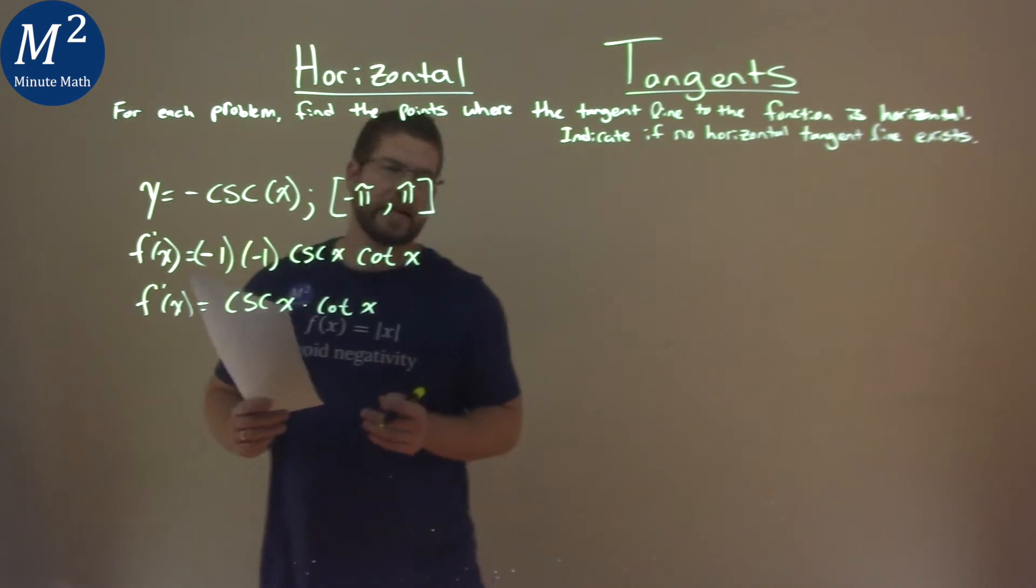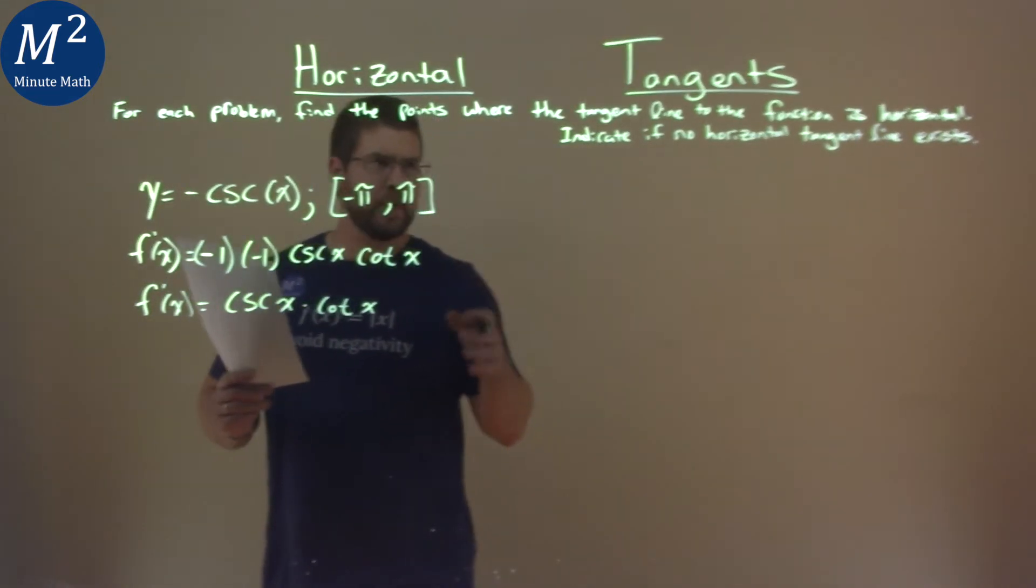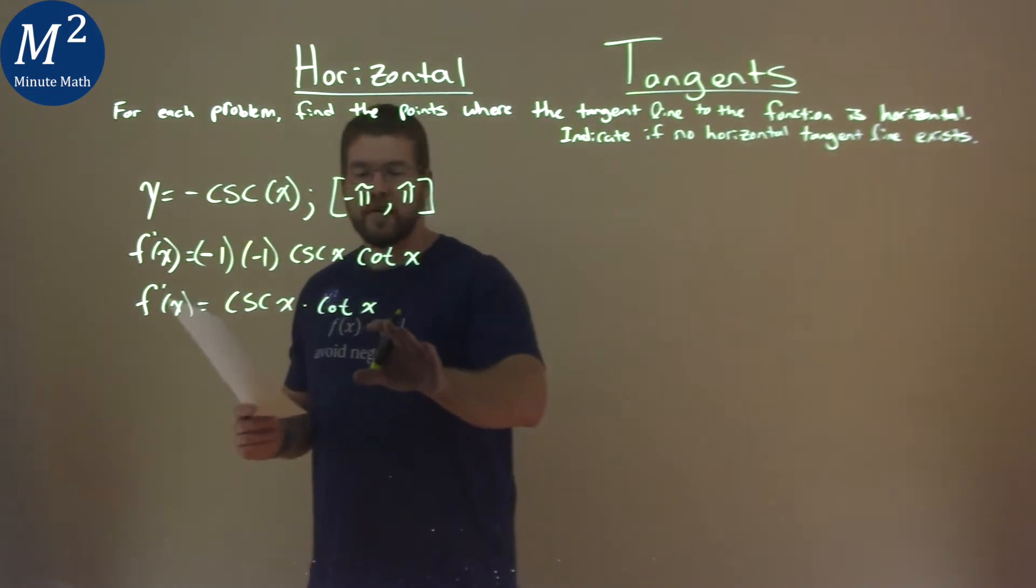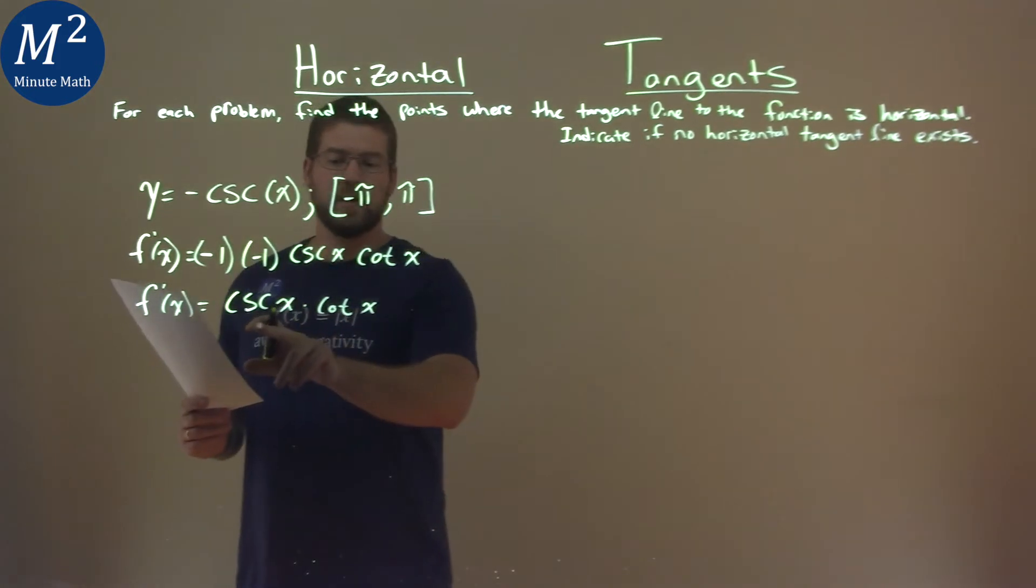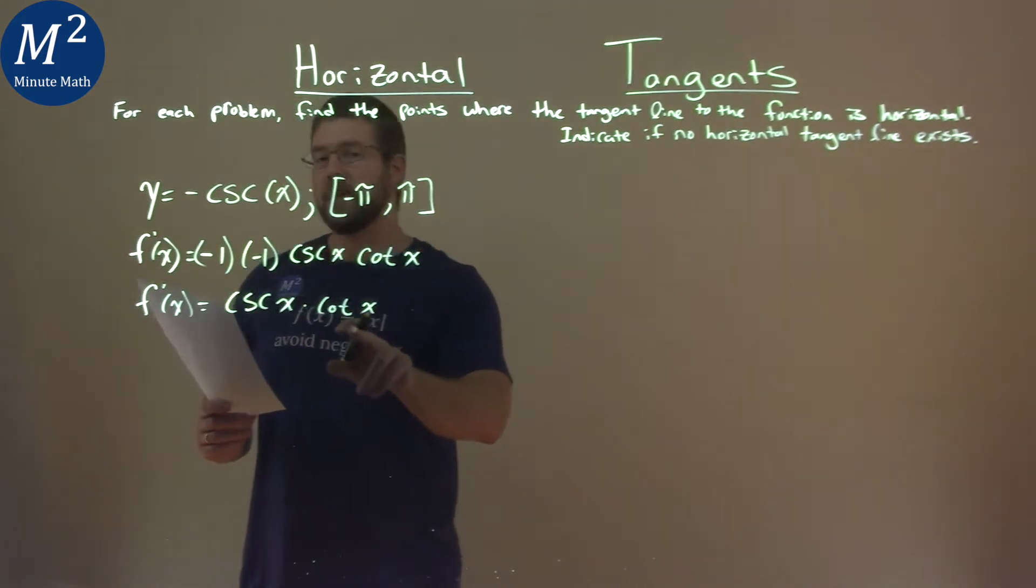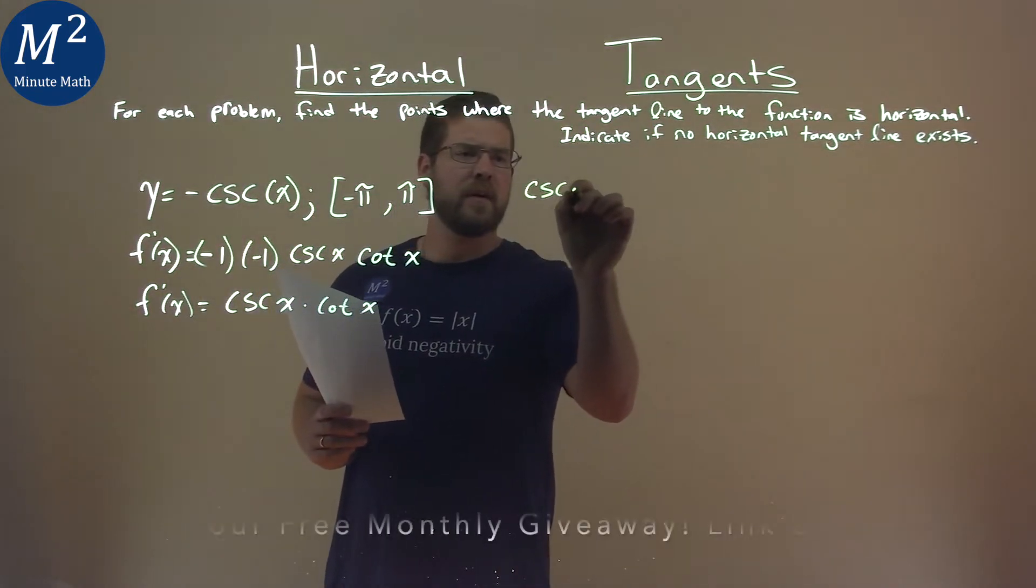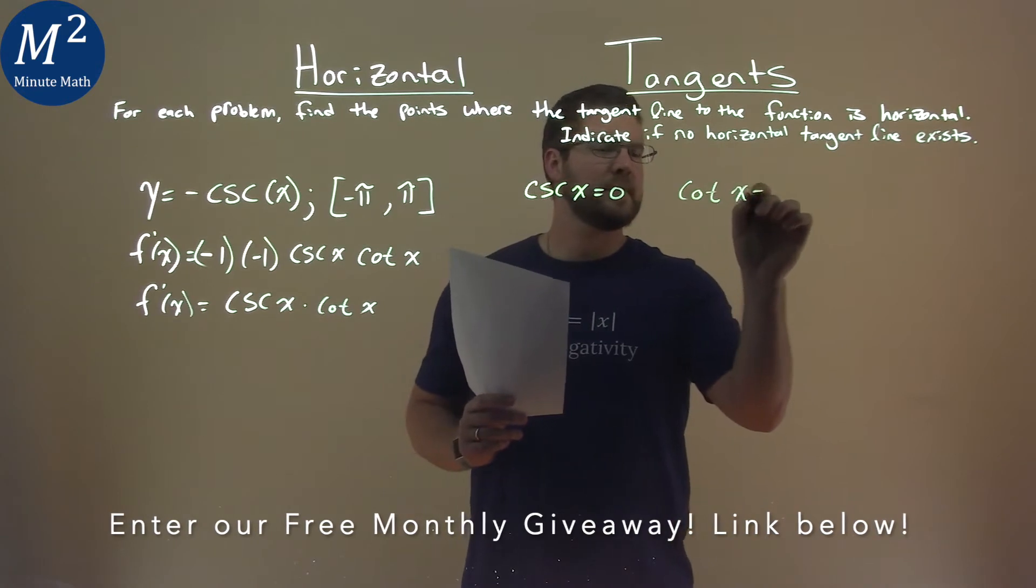Now that's where it becomes tricky. We can set each one now equal to 0, because remember, we want to find where the tangent line of the function is horizontal, where the derivative is equal to 0. Since there's multiplication here, we can see where cosecant of x is equal to 0 and cotangent of x is equal to 0. So let's write that out: cosecant of x is equal to 0, and then cotangent of x is equal to 0.